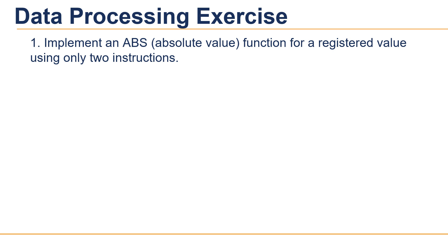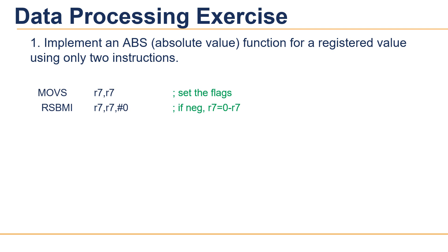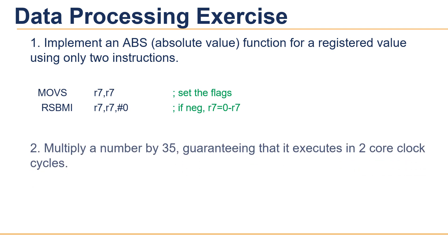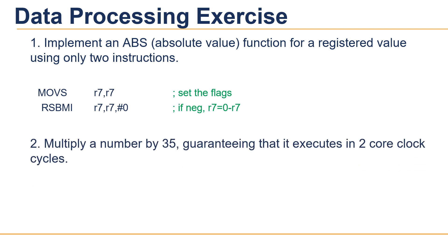Now let's do some programming exercises. First, implement an absolute value function for a register using only two instructions. The solution is: in the first cycle it sets a flag to check whether the number is negative or positive, and in the second cycle it performs a reverse subtract if it is negative, otherwise it is left as-is. This type of instruction is known as a conditional instruction and can only be written in ARM code.